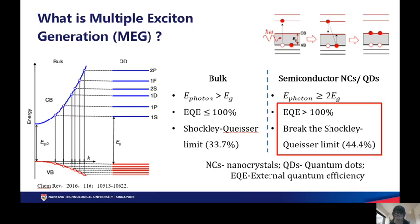It is considered as the inverse process of Auger recombination. According to the calculation, MEG provides a possibility of increasing the PCE of a single-junction solar cell to 44.4% and breaking the Shockley-Queisser limit.